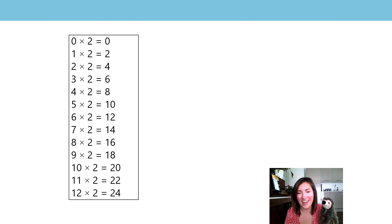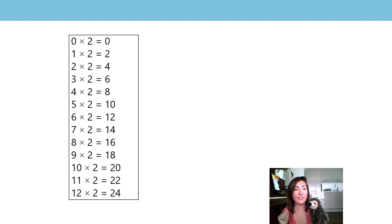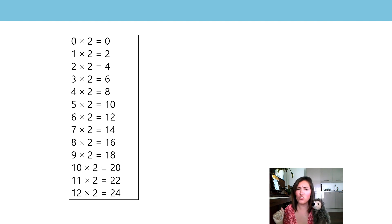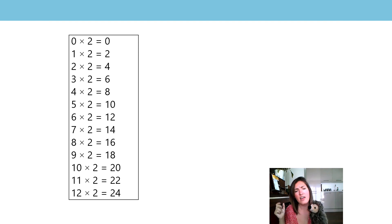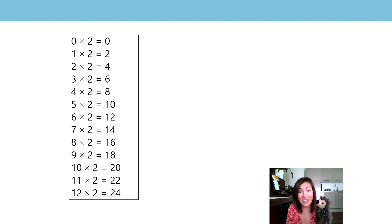Okay everyone, this is my favorite way — Harold wants us to do it in a cool cat voice. Get your coolest cat voice ready: zero twos is zero, one two is two, two twos are four, three twos are six, four twos are eight, five twos are ten, six twos are twelve, seven twos are fourteen, eight twos are sixteen, nine twos are eighteen, ten twos are twenty, eleven twos are twenty-two, twelve twos are twenty-four. I wonder if you can pause the video and come up with some other ways to recite your two times tables — maybe a spooky voice, maybe a mouse voice. What different ways can you come up with? Pause the video and have a go.